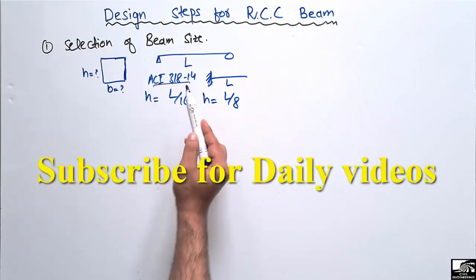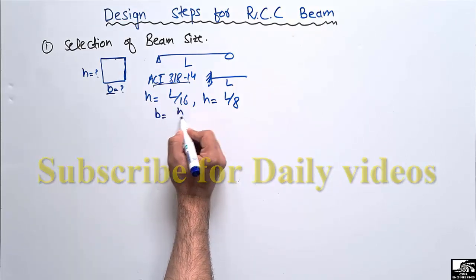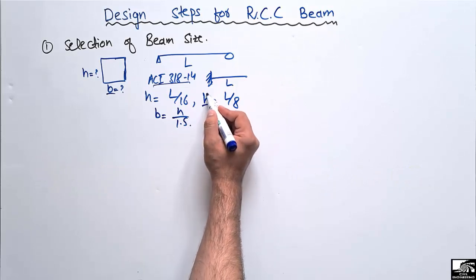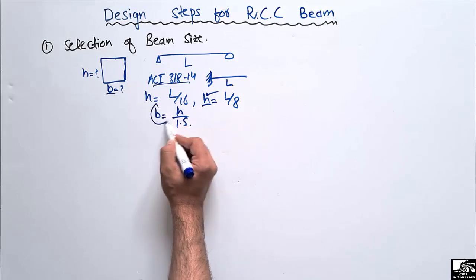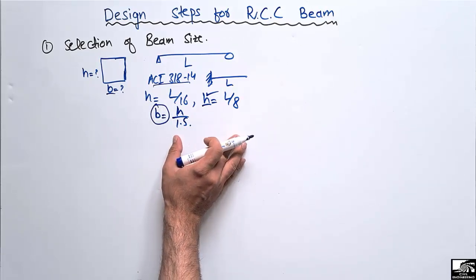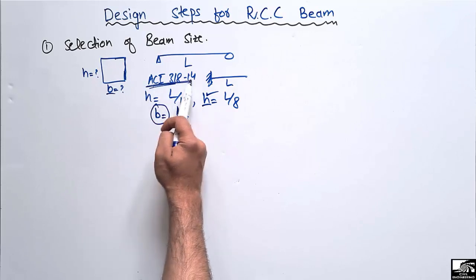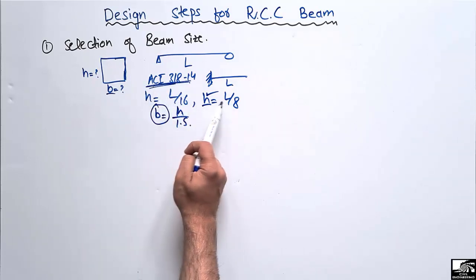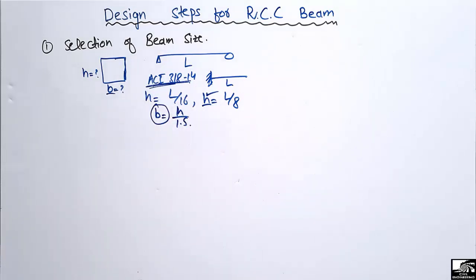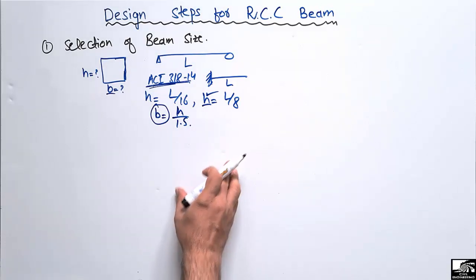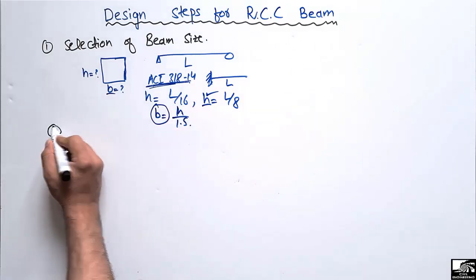For the width, it can be defined by the formula: width equals height divided by 1.5. We find the height from the earlier formula, then divide by 1.5 to get the width value. This is a general example using ACI codes. ACI also provides different formulas for one-end continuous and two-end continuous beams. You can find a specific video for this on the channel. The next step after beam size selection is the loads on the beams.